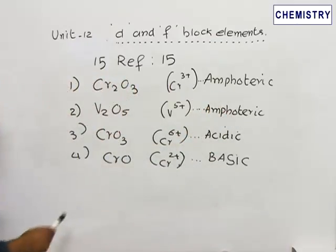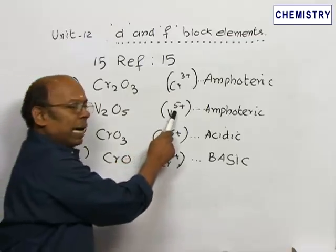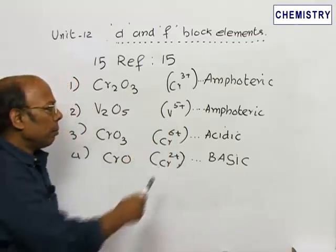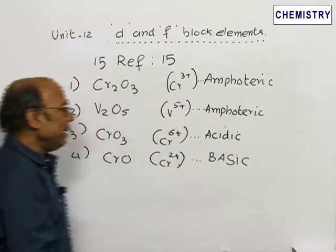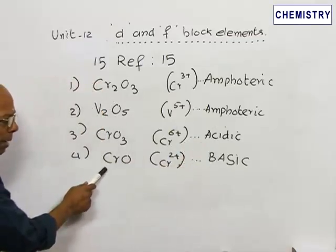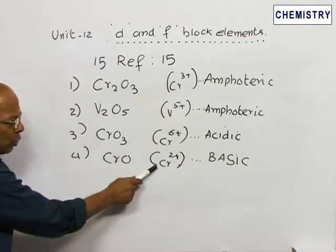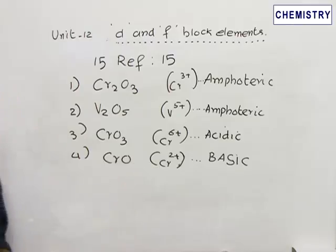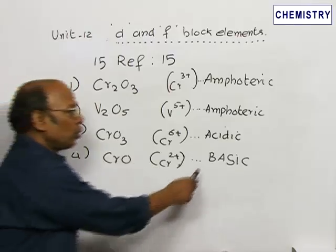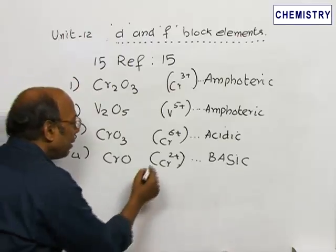Vanadium pentoxide (V2O5) is in the highest oxidation state but shows anomalous amphoteric nature. CrO, where chromium has the lowest oxidation state of +2, shows basic nature.